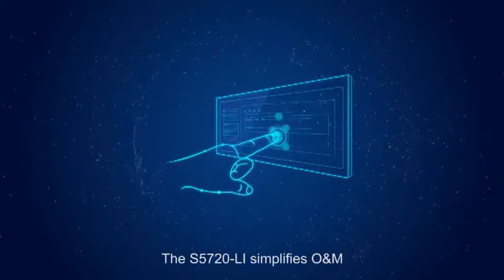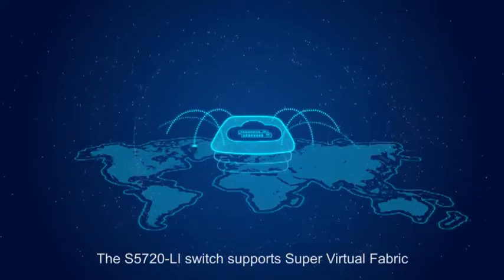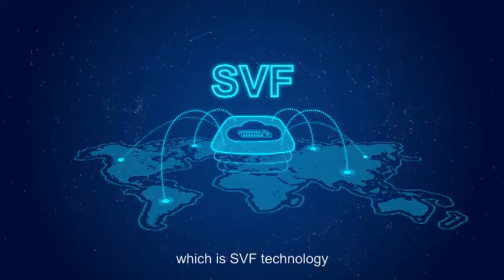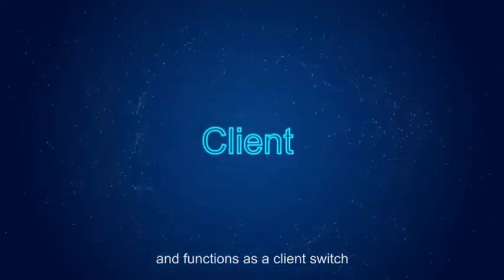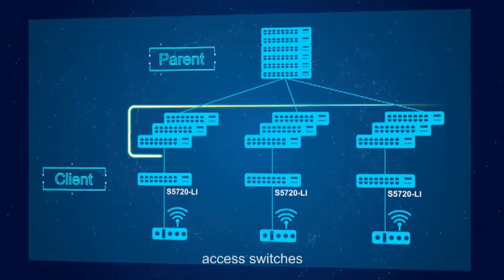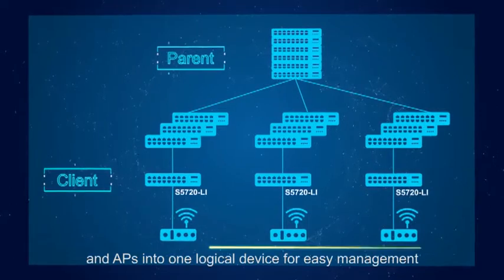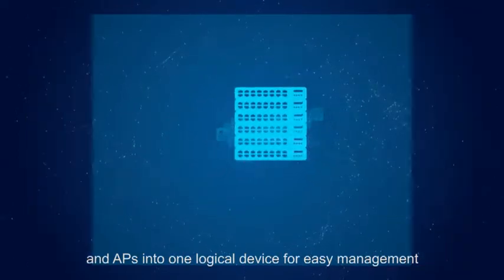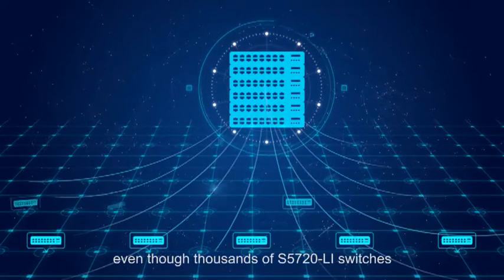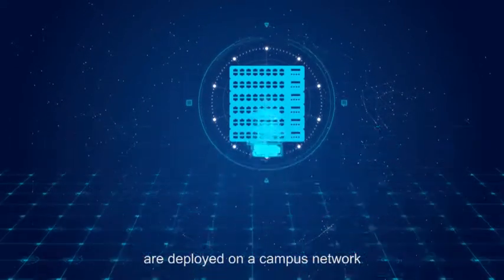The S5720 Li simplifies O&M. It supports super virtual fabric, which is SVF technology, and functions as a client switch. SVF virtualizes core switches, aggregation switches, access switches, and APs into one logical device for easy management. We only need to manage one device, even though thousands of S5720 Li switches are deployed on a campus network.